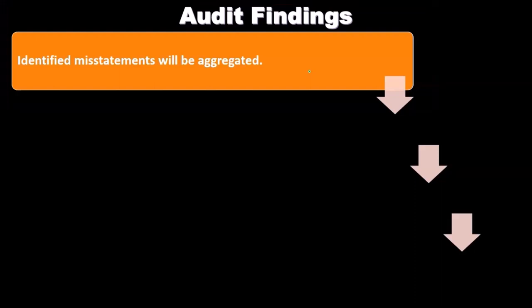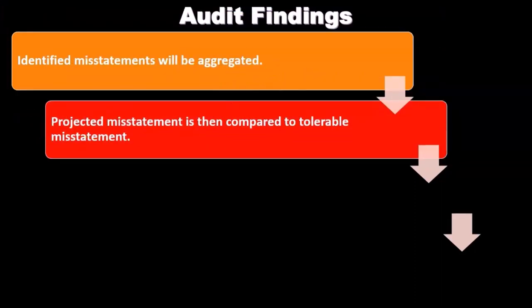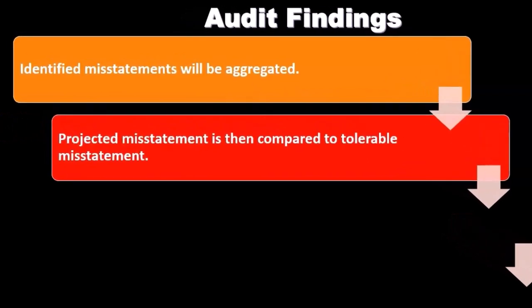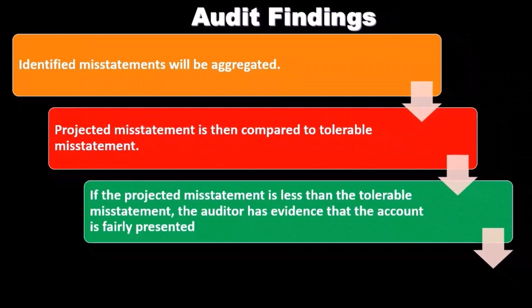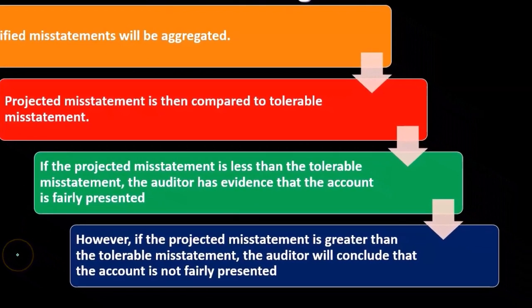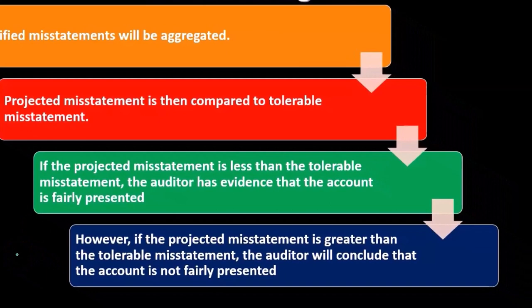From the audit findings, identified misstatements are aggregated. The projected misstatement is then compared to the tolerable misstatement — the level of misstatement we would find acceptable. If the projected misstatement is less than the tolerable misstatement, the auditor has evidence that the account is fairly presented. However, if the projected misstatement is greater than the tolerable misstatement, the auditor concludes that the account is not fairly presented.